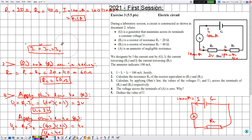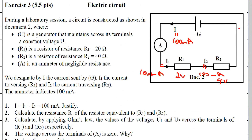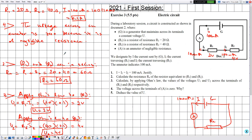Number four: the voltage across the terminals of A is zero. Why? A is the ammeter, and we know that the voltage across an ammeter is zero since it is of negligible resistance. Therefore Ua equals zero.